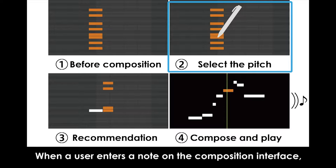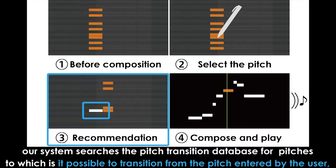When a user enters a note on the composition interface, our system searches the pitch transition database for pitches to which it is possible to transition from the pitch entered by the user, and recommends a list of these pitches.